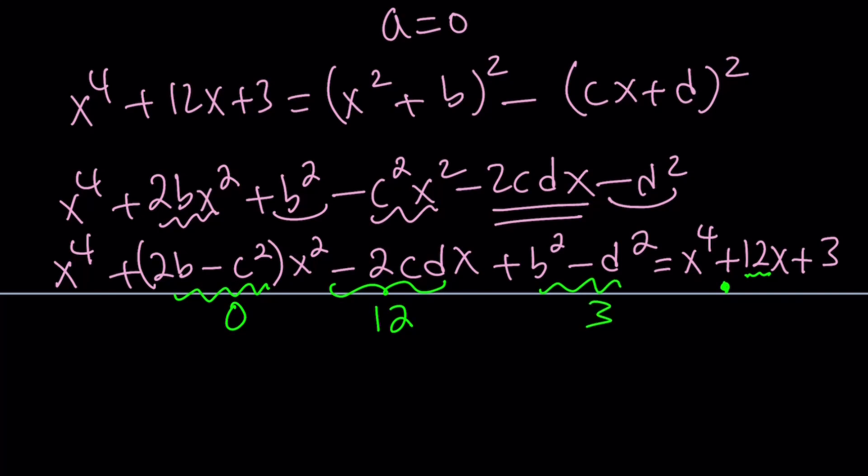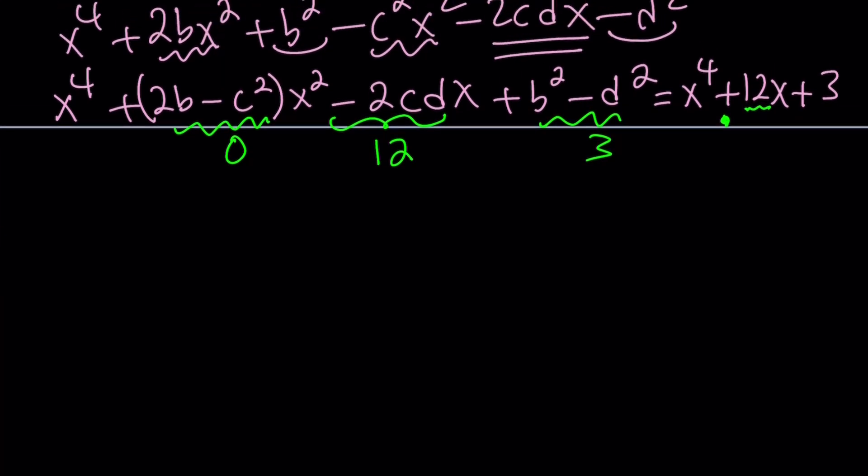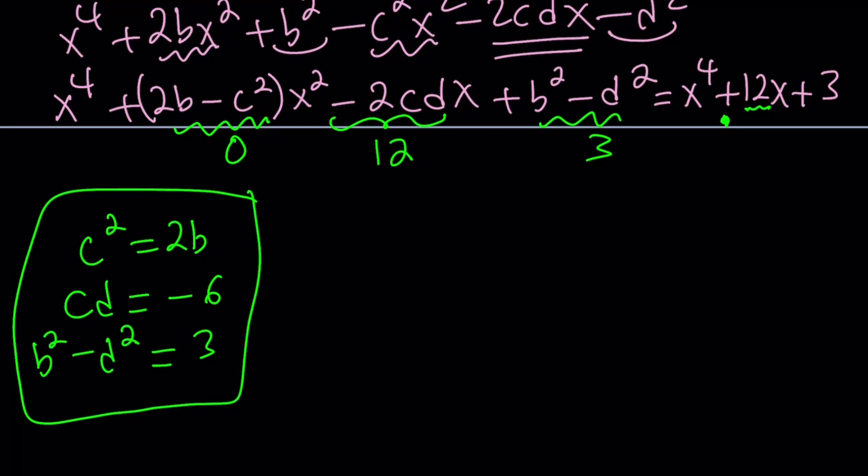Let's go ahead and write a system. The first one gives me c squared equals 2b. The second one gives me negative 2cd equals 12, but that can be written as cd equals negative 6. And the third one is b squared minus d squared is equal to 3. So that is my system. If I can solve this system, then I can find the missing coefficients.